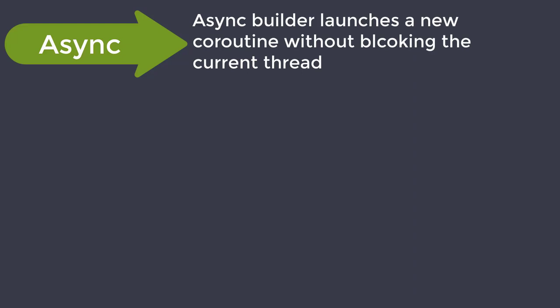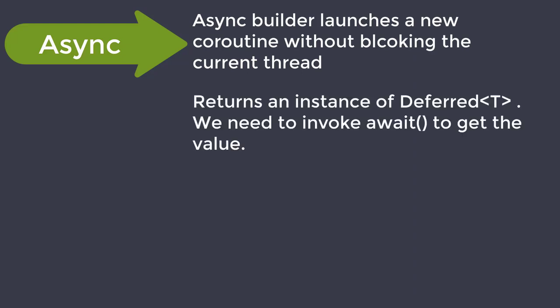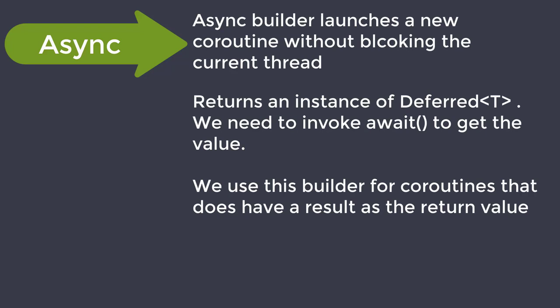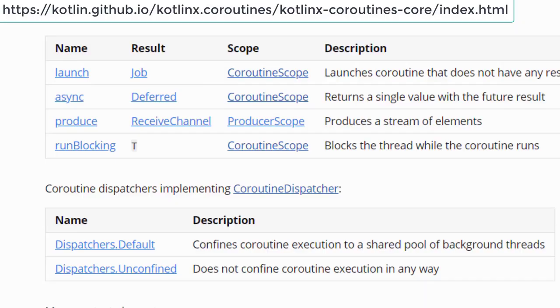If we want to get a result as a return value, we should use the Async Coroutine Builder. The main specialty of the Async Builder is that it allows us to launch coroutines in parallel. Async Builder also launches a new coroutine without blocking the current thread and returns an instance of Deferred of the type of the result. The Deferred interface is an extension of the Job interface. To get the value from the Deferred object, we need to invoke its await function.